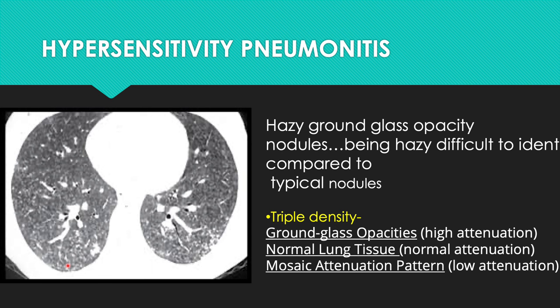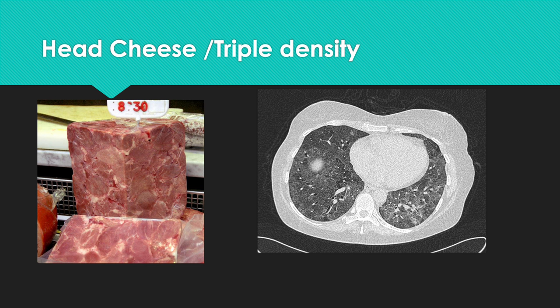In hypersensitivity pneumonitis, the triple density sign — formerly called the head cheese sign — is characteristic: ground-glass opacities of high attenuation (the nodules), a mosaic attenuation pattern, and normal lung in between — three different densities in the same scan. These ground-glass centrilobular nodules along with mosaic attenuation are typical of HSP.